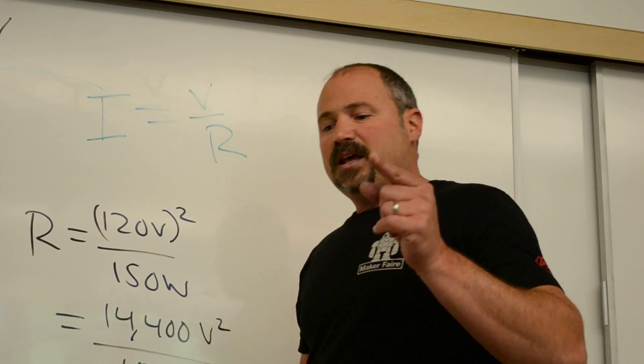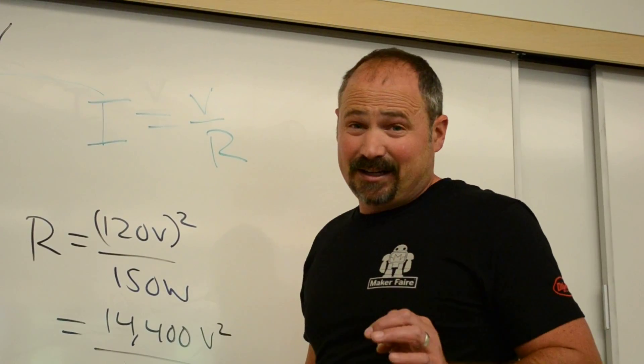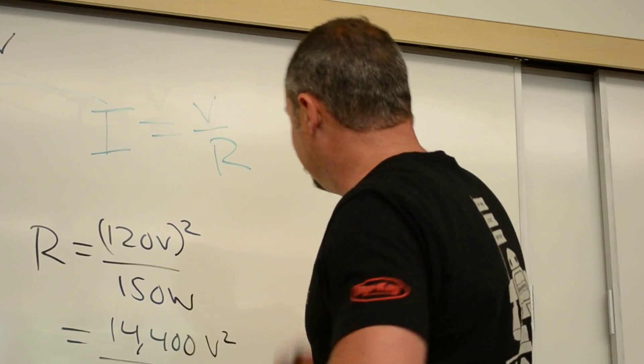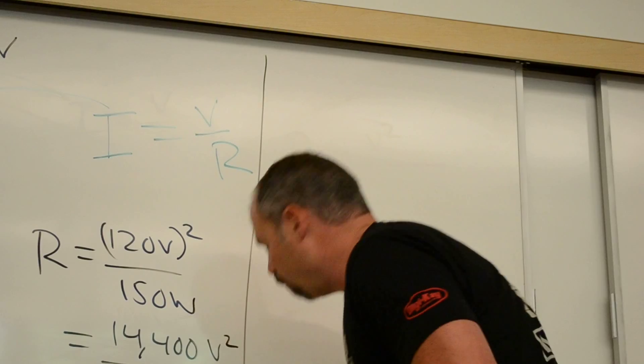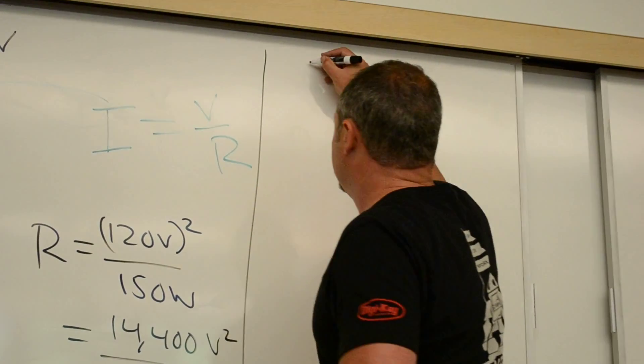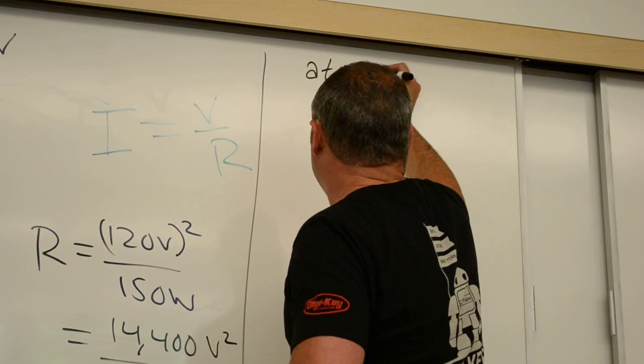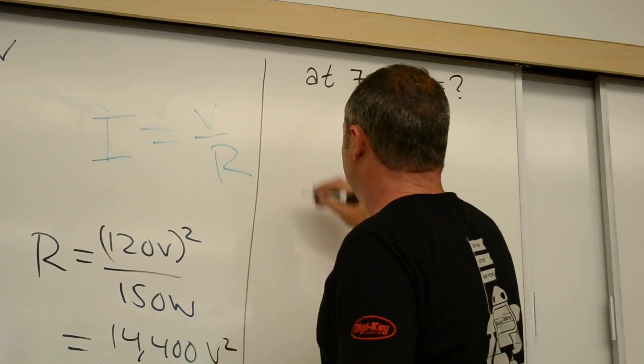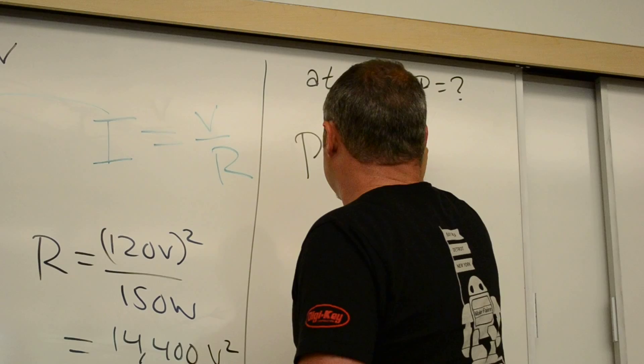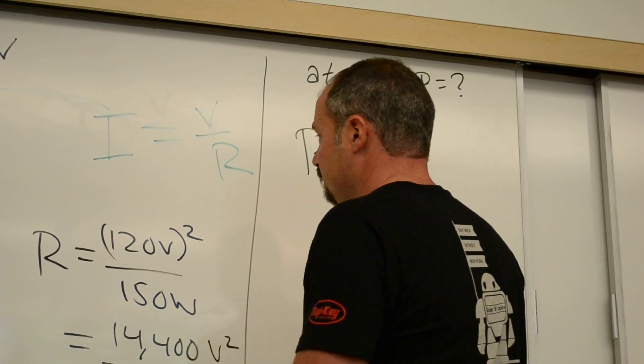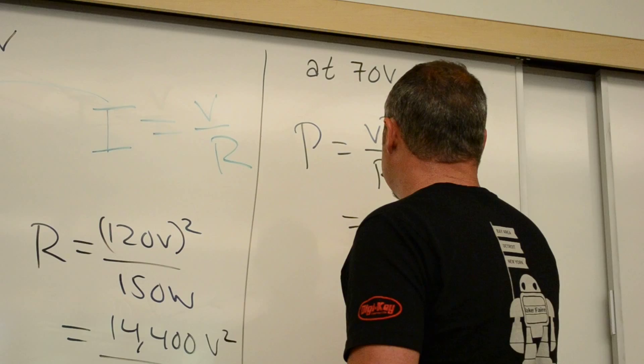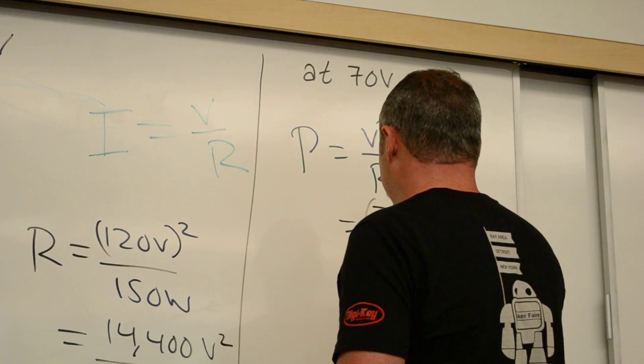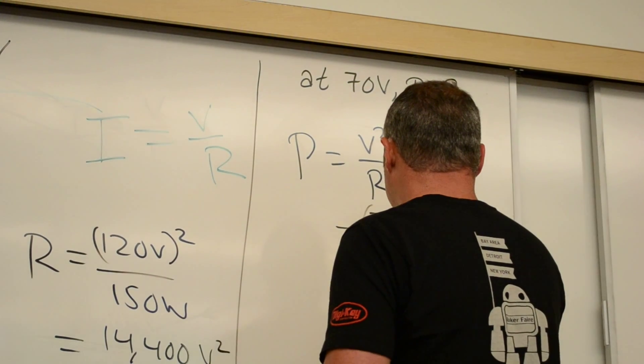Excellent. Now we can figure out how bright it is, or more specifically, how much power it's giving off when run at 70 volts. So at 70 volts, the power equals voltage squared over resistance, just doing what we did before. And it's 70 volts squared all over about 100 ohms.